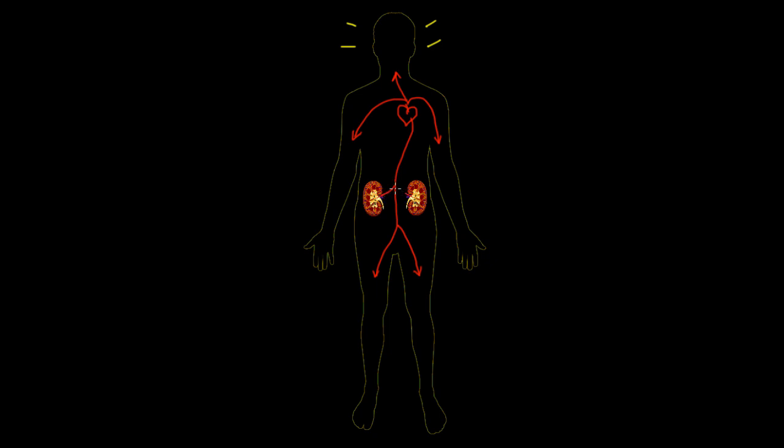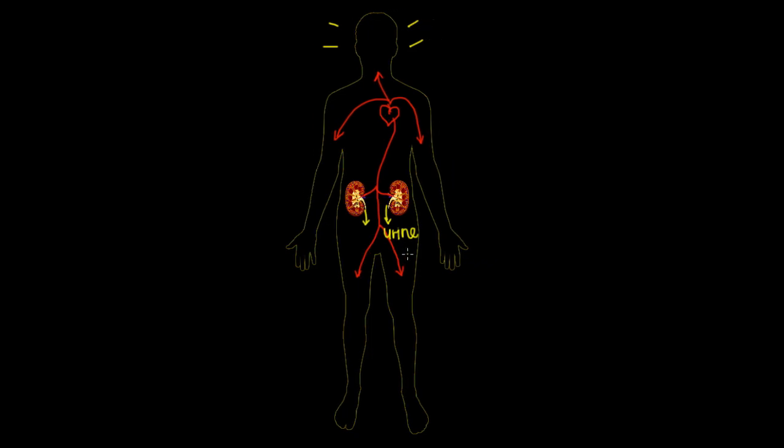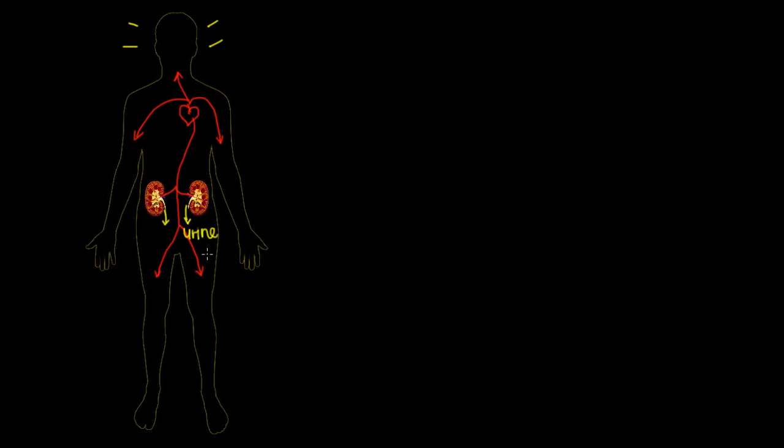Both of your kidneys then are going to filter the blood and release urine, which is just a collection of waste products that your body wants to get rid of, and the urine's gonna hang out in your bladder that sits about right here until it's an appropriate time to go to the bathroom. And that's kind of a broad overview, but let's go into a little more detail about what the kidneys do.